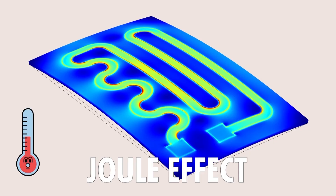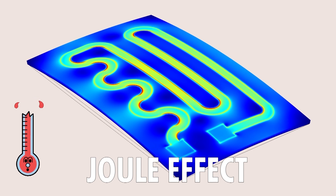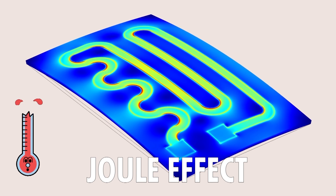When conductive materials transmit a current, the Joule effect leads to the dissipation of energy via heating. And this is proportional to the resistance and to the square of the current intensity.